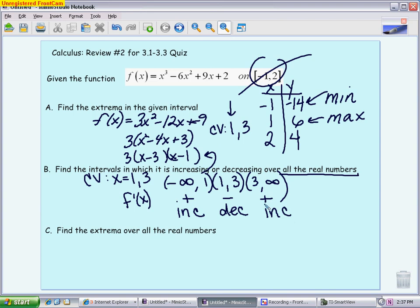Part C wants to know the extrema over the real numbers. Don't care about the interval -1 to 2—we're throwing that out. We're looking over all the real numbers, and we already did almost all the work. I can look above and know that since it's increasing to decreasing, I'm going to have a maximum at 1. Since it's decreasing to increasing, I'm going to have a minimum at 3.